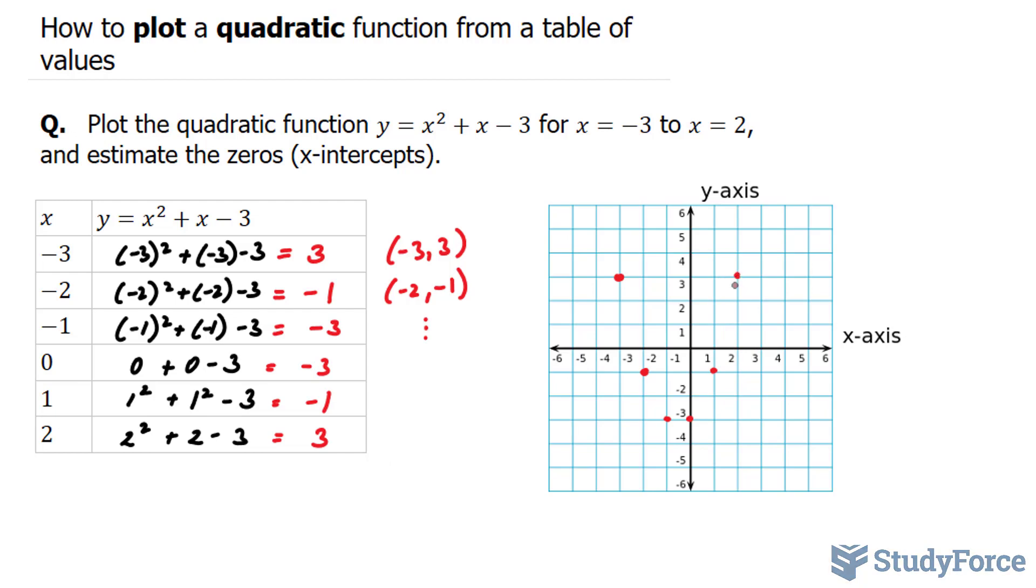So what this tells us is that our vertex, the turning point for this parabola, will be somewhere in between this point and that point. We don't know what it is, and the question isn't asking for it, so we'll leave it like that.